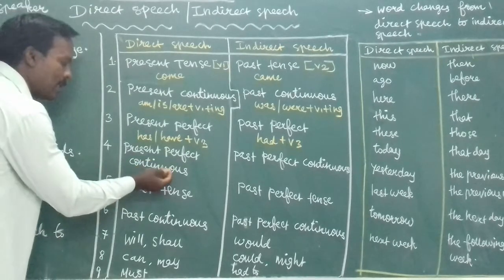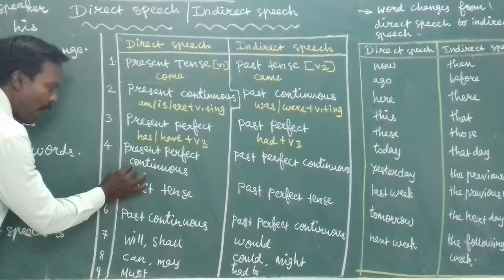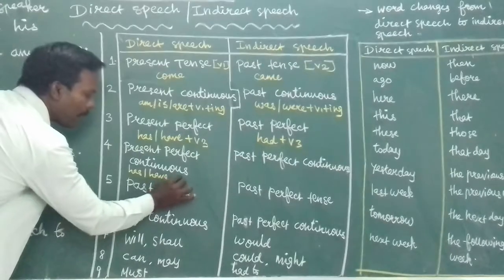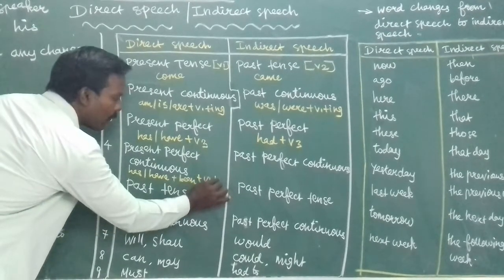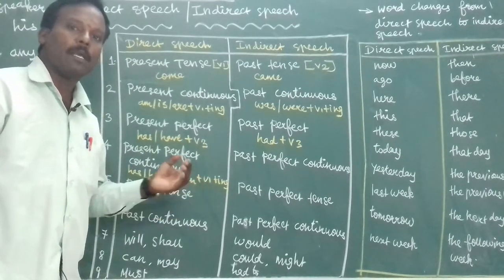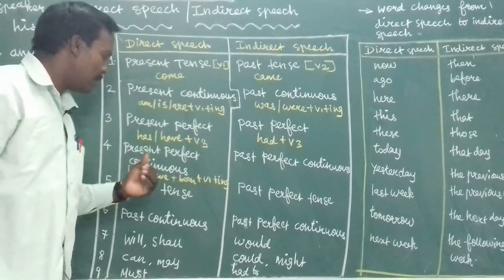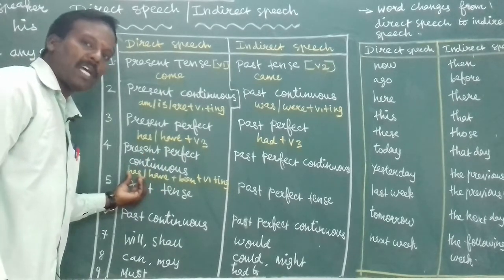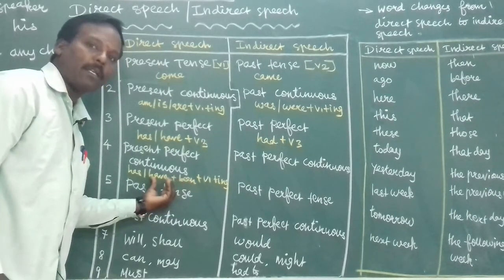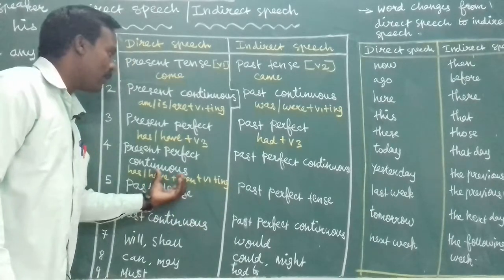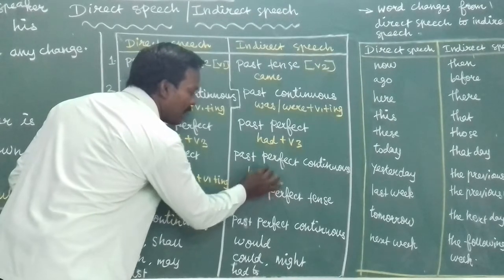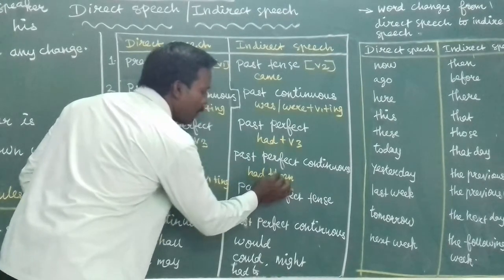Fourth tense change: present perfect continuous tense changes to past perfect continuous tense. Present perfect continuous tense is formed with has been or have been plus V1+ing. For example: he has been writing, she has been writing, I have been writing, we have been writing, you have been writing. Past perfect continuous tense is formed with had been plus V1+ing.